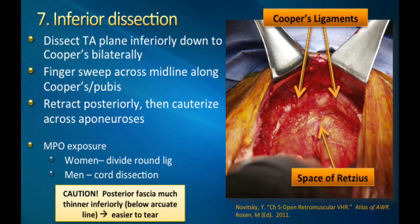Once you've completed your bilateral TAR dissection, proceed with your inferior and superior dissection. For inferior dissection, bring one hand down each side of your retromuscular plane toward the pubis, take a finger and sweep it along Cooper's ligament to the contralateral side, taking care not to disrupt any corona mortis or other bridging vessels. Once across the midline, drop your hand and fingers down and then bovie across just deep to the anterior rectus sheath, connecting both sides and typically leaving a nice flap of tissue in your suprapubic space. Be mindful that below the arcuate line the tissue is much thinner and can tear easier.